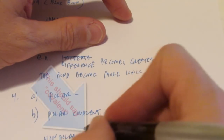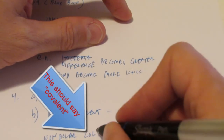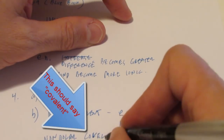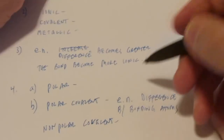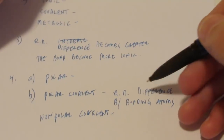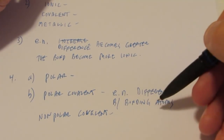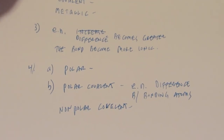And what do you think nonpolar covalent is? I'm going to leave that one to you guys to do yourself. So polar covalent means there is an electronegativity difference between bonding atoms. Nonpolar covalent, I think you guys can figure that one out.